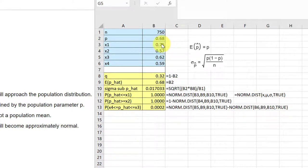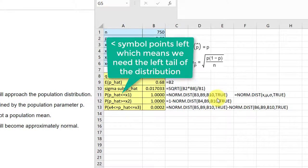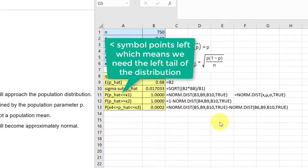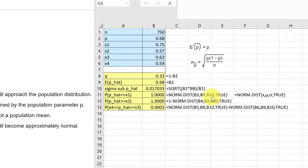The final parameter is true, which means we want the cumulative probability from the left infinity all the way up to that point. And so we just put that formula in. In this case, it tells us that the probability is approximately one. That more than likely the sampling proportion is going to be less than 0.75.